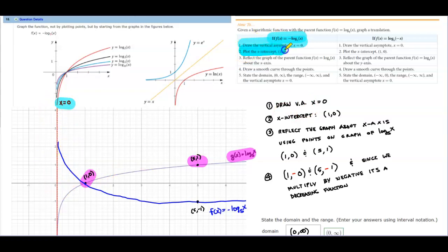And then we're going to plot the x-intercept. So our x-intercept is plotted, so we have (1, 0). And then it says we're going to reflect the graph about the x-axis using the points on the graph of the parent function. So these are the points that are on the parent function.